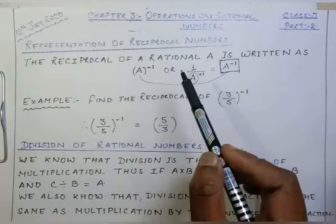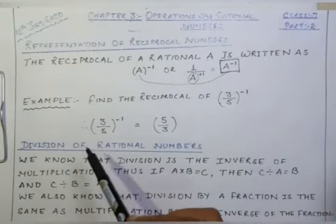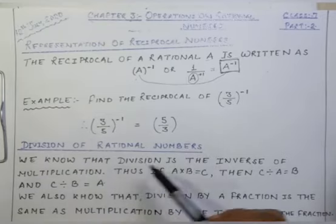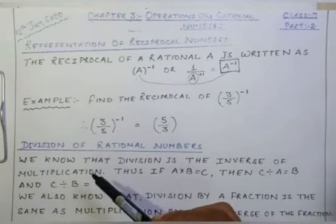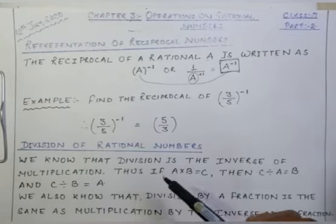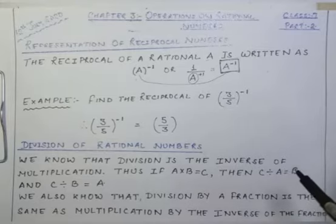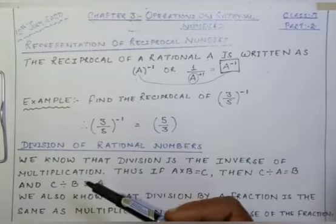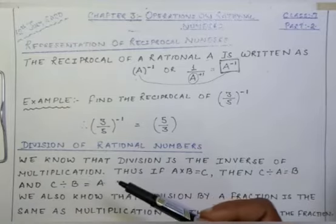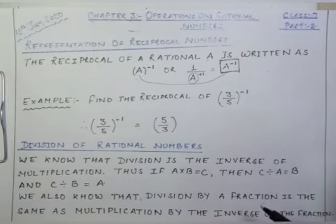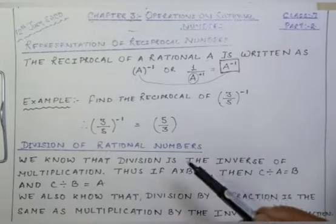I hope this much is clear to everyone. Let us come to another topic, that is division of rational numbers. We know that division is the inverse of multiplication. Thus if A divided by B equals C, then C divided by A equals B and C divided by B equals A. We also know that division by a fraction is the same as multiplication by the inverse of that fraction.